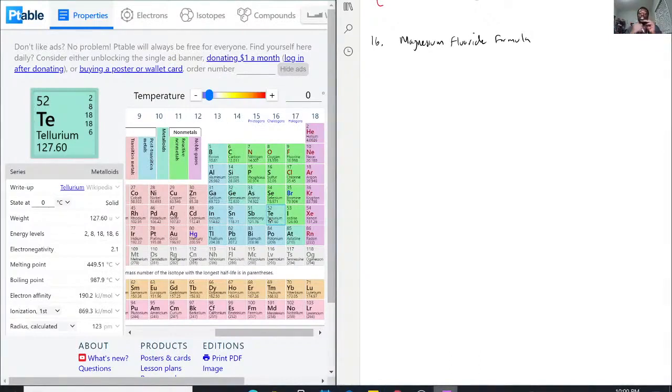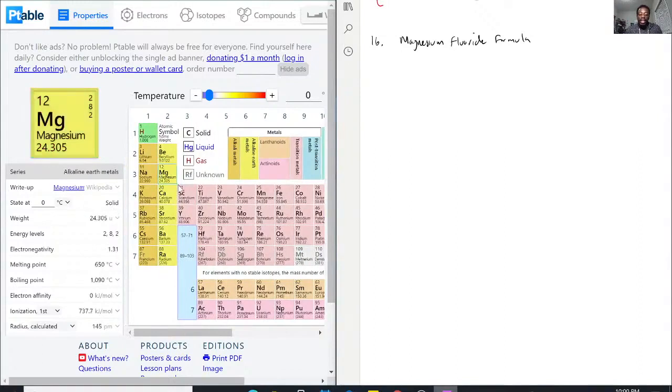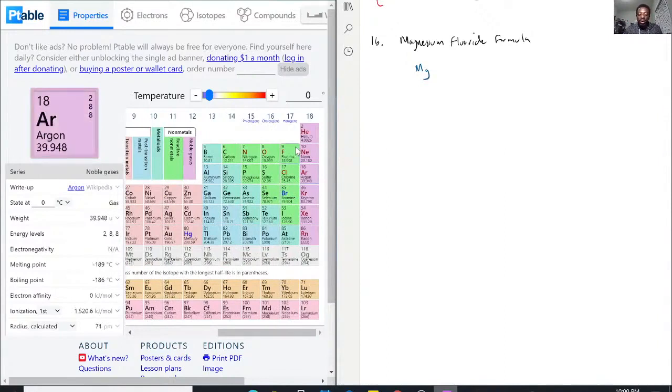The type of molecule does affect how we're going to write it down based on the name. So magnesium fluoride looks like it has magnesium and a fluorine.